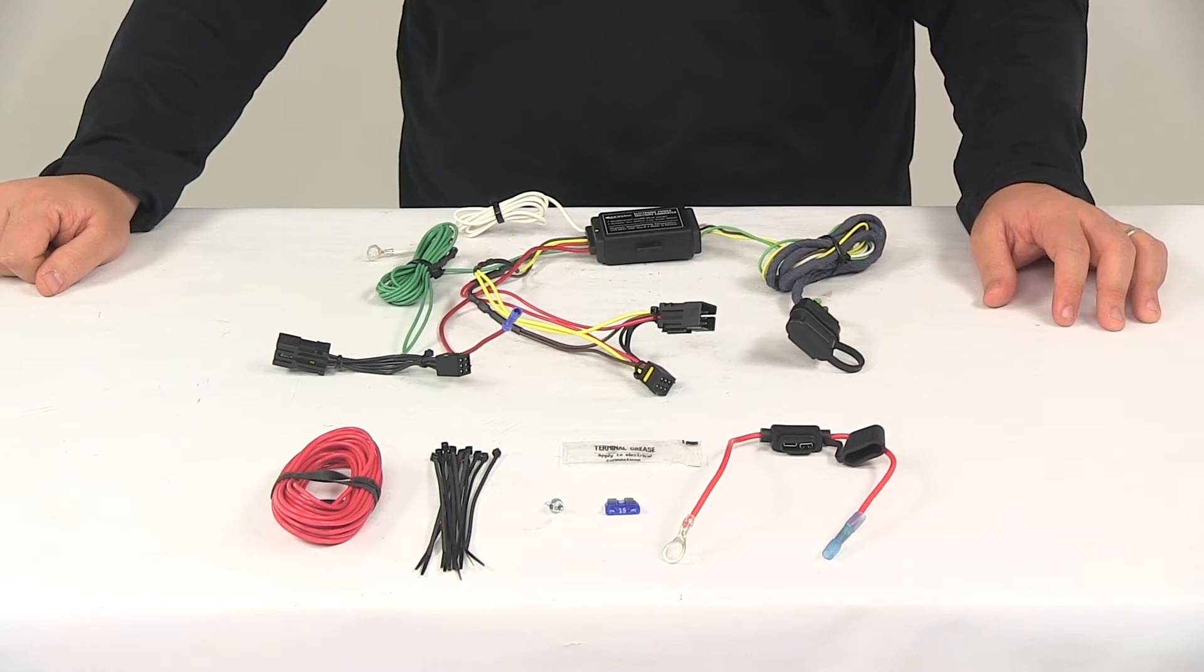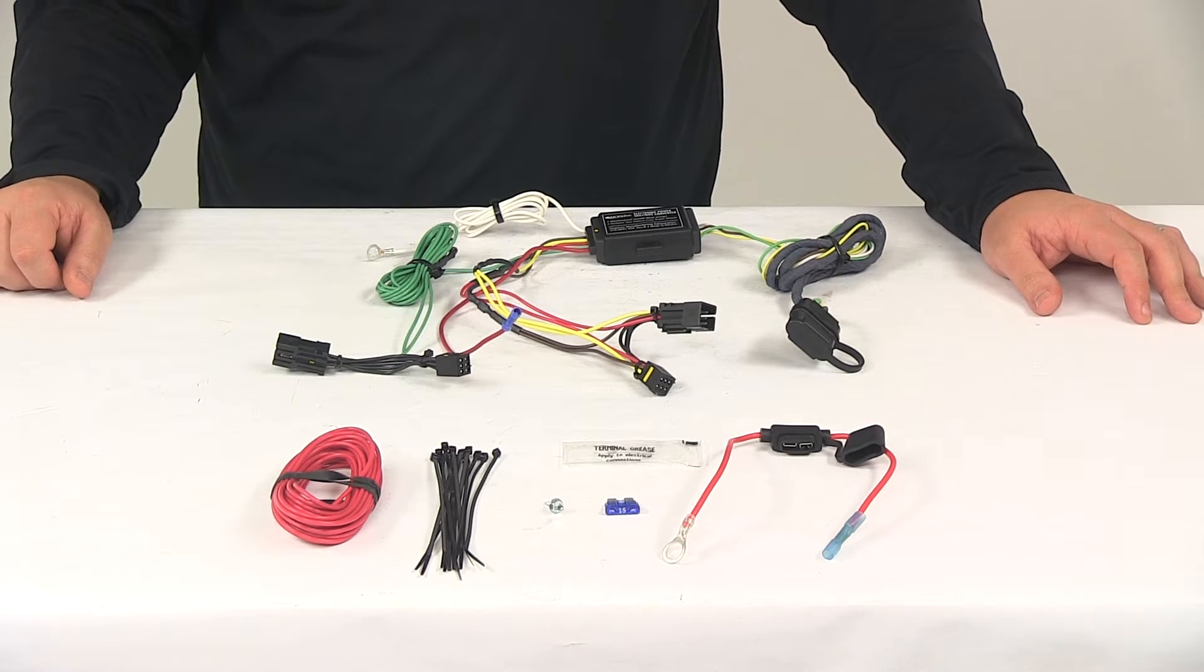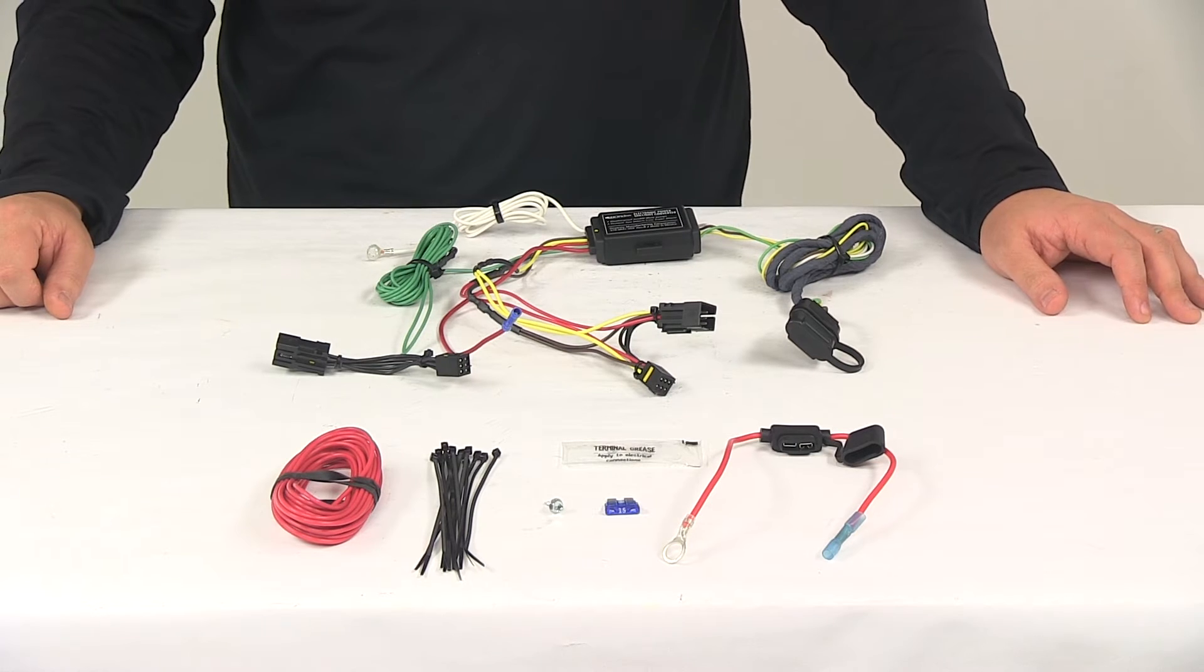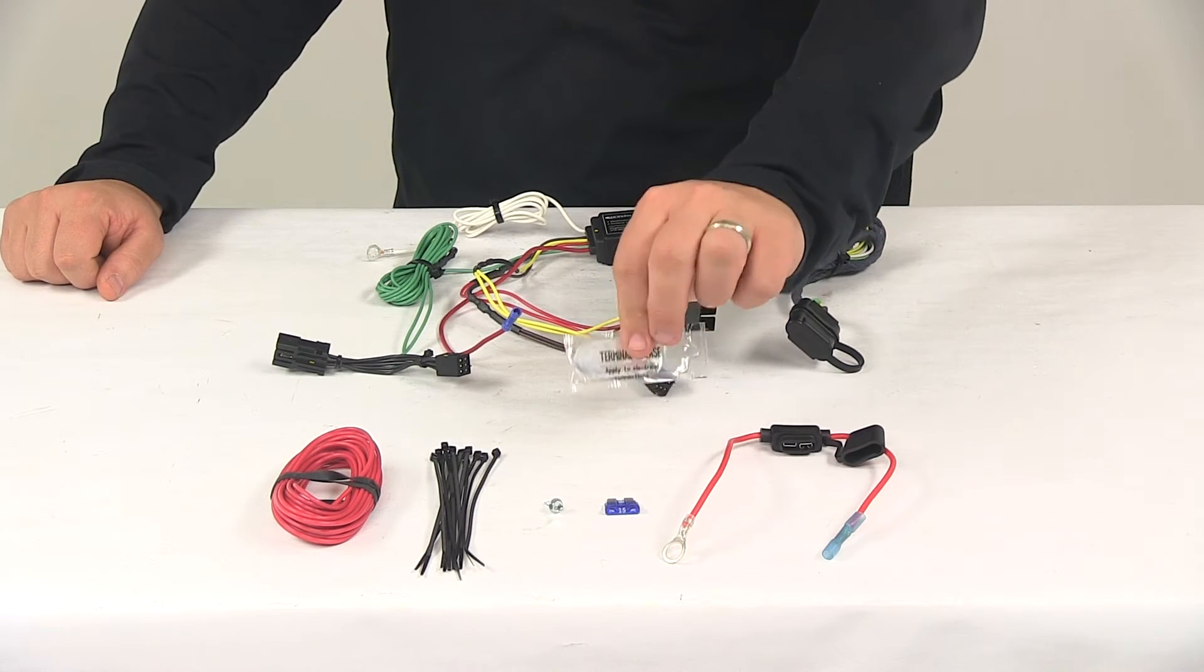It's also recommended that you use a small amount of terminal grease on all your electrical connections like the plugs on the vehicle and the four-pole connector itself. The grease is going to help prevent corrosion to the terminals and the packet of grease is included with the kit.